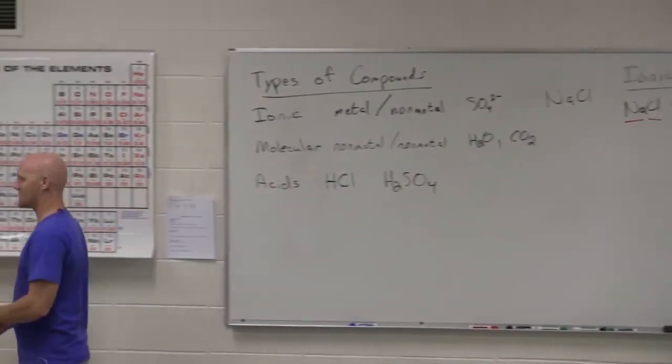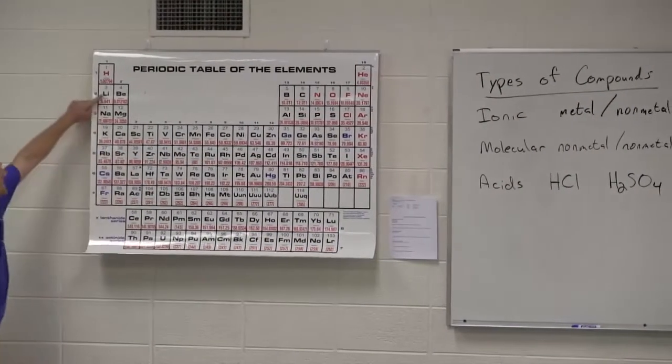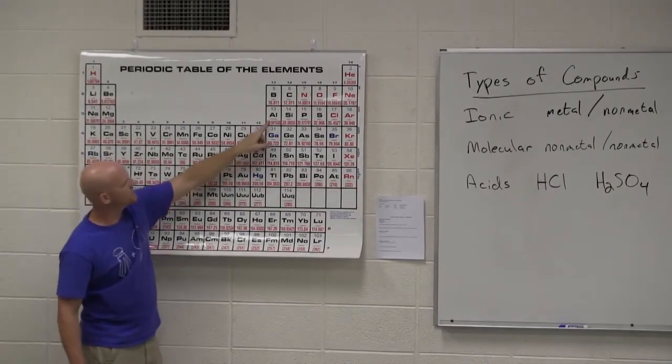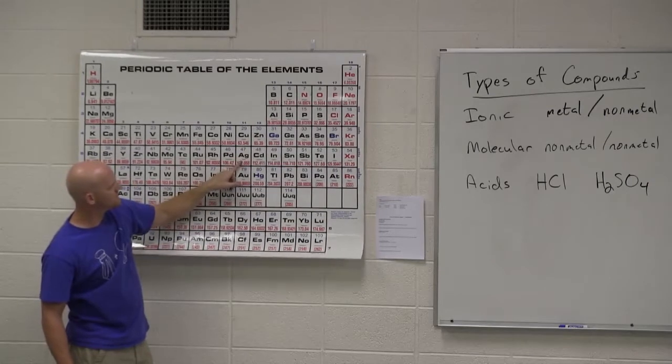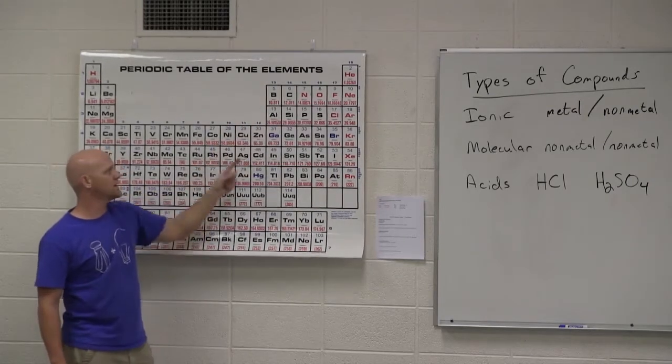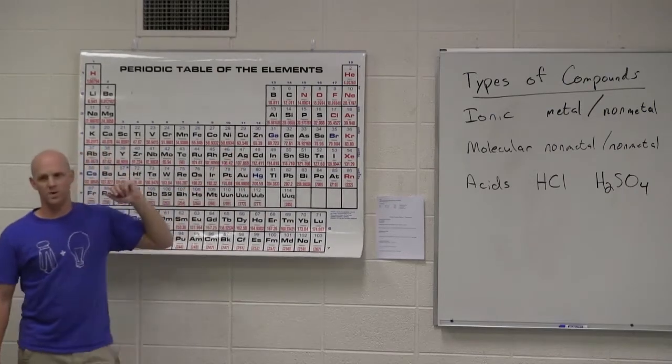It turns out rule two is not necessary for the group one metals, the group two metals, and for aluminum, zinc, silver, and cadmium. So it turns out in an ionic compound, aluminum is always plus three. Zinc and cadmium are always plus two, and silver is always plus one.